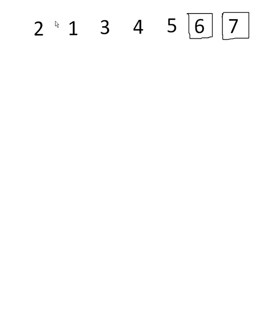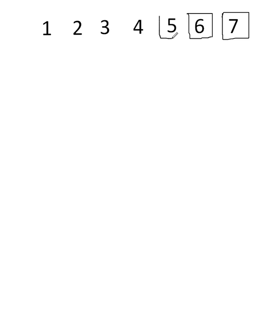Now let's go through the list again. Compare two with one — they're in the wrong order, swap them round. Two with three is right. Three with four is right. Four with five is right. We now know five is in the right place.